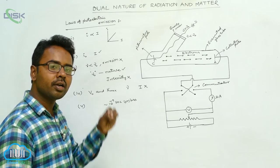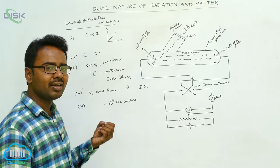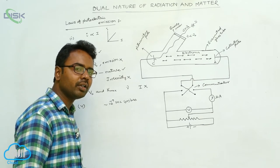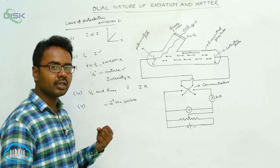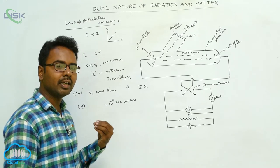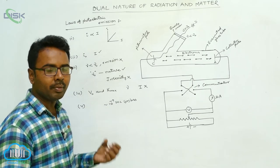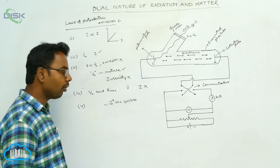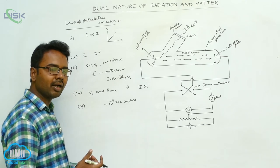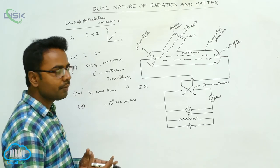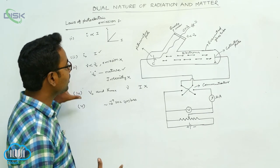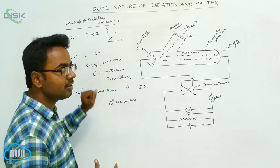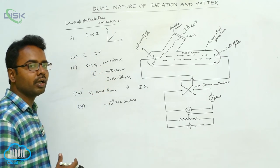Even though the incident radiation is exceedingly dim and the intensity is very small, the photoelectric effect is still an instantaneous process. The electrons are emitted instantly; the time lag between the incident radiation and emission of electrons is of the order of 10⁻⁹ seconds or less. These five points observed from the experimental study of photoelectric effect are summarized as the laws of photoelectric emission.